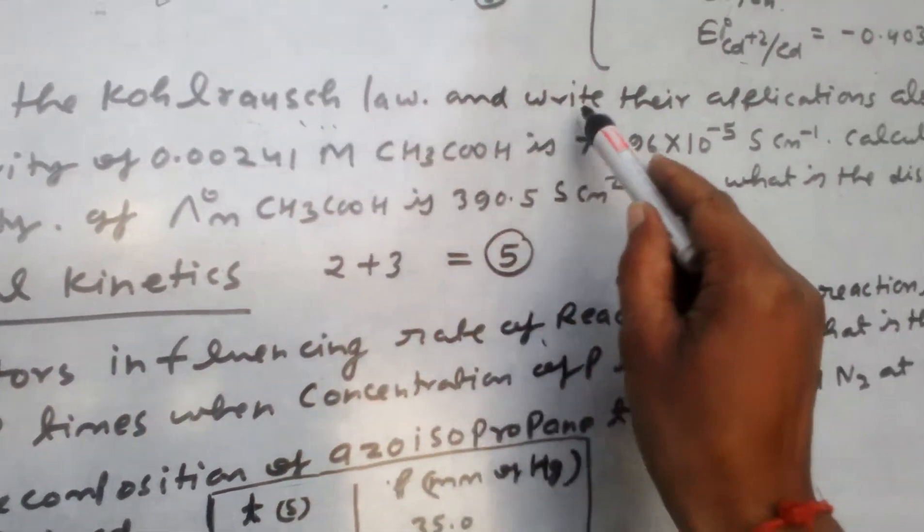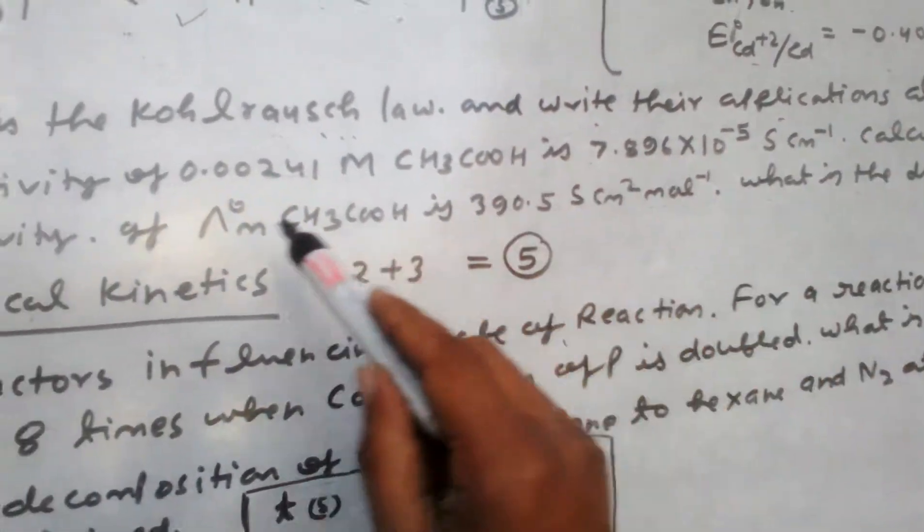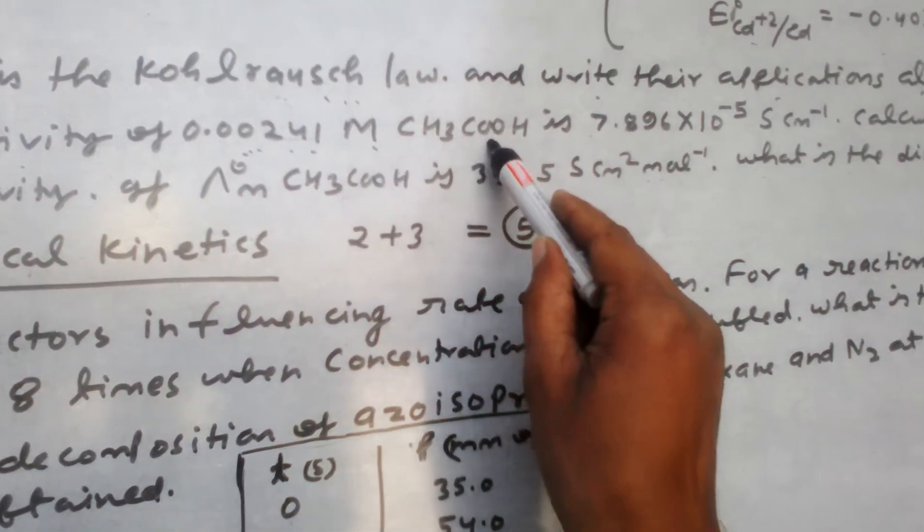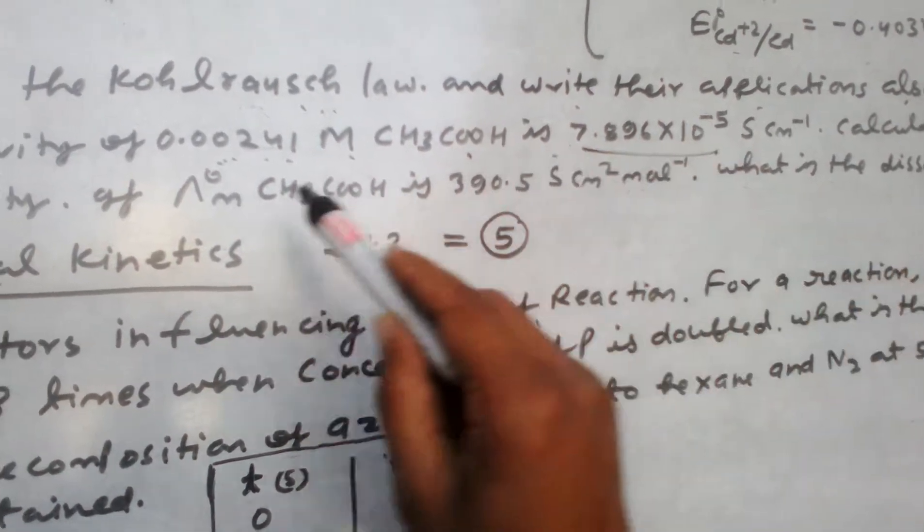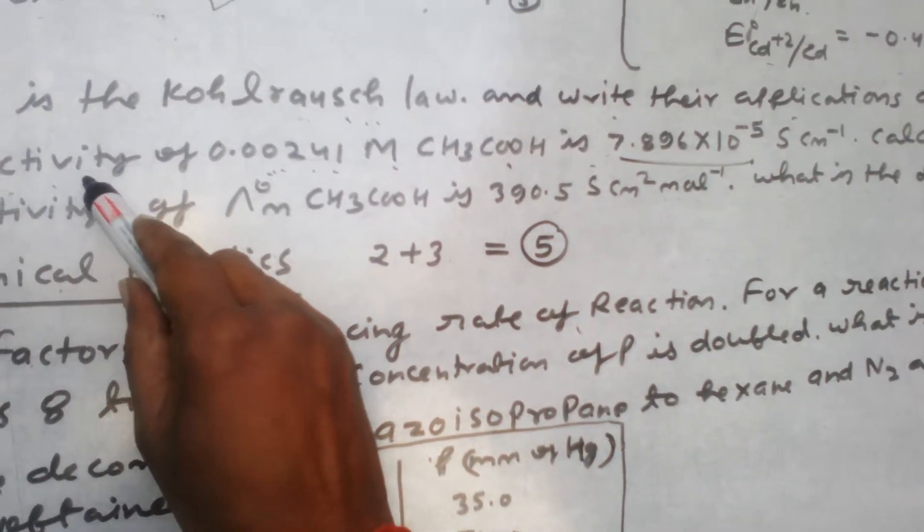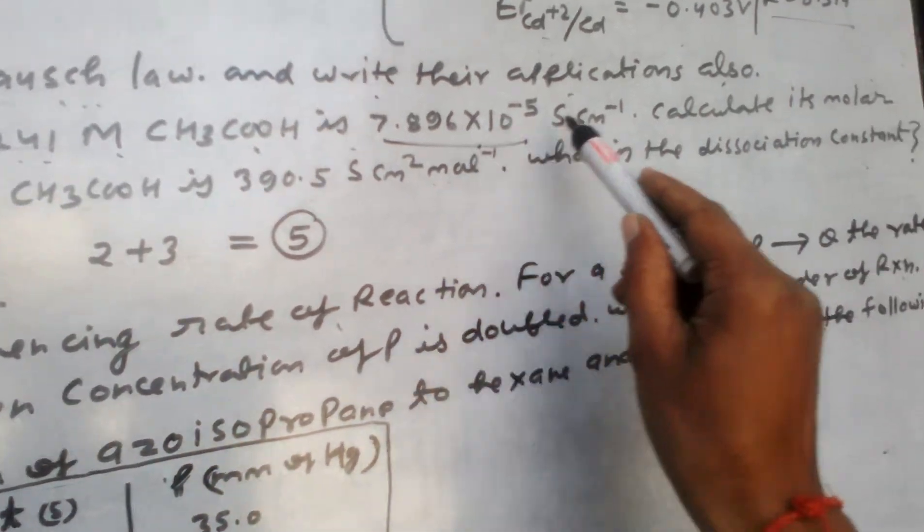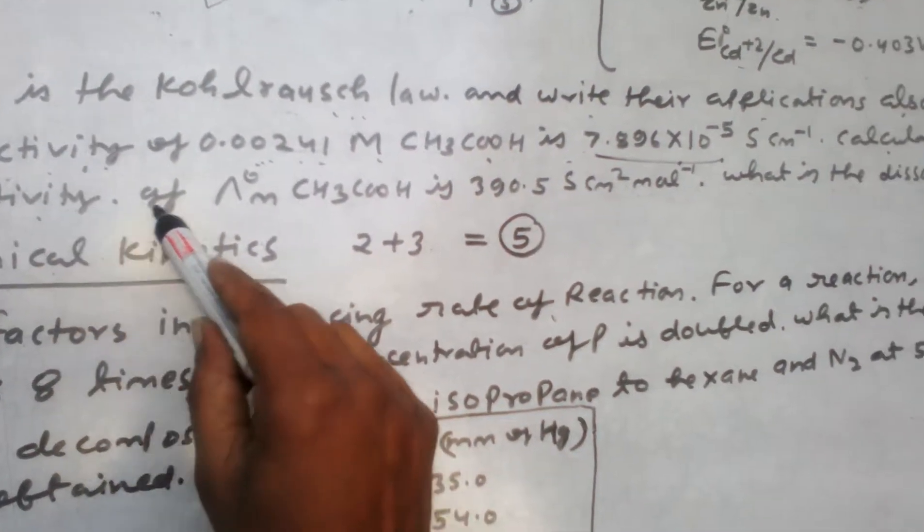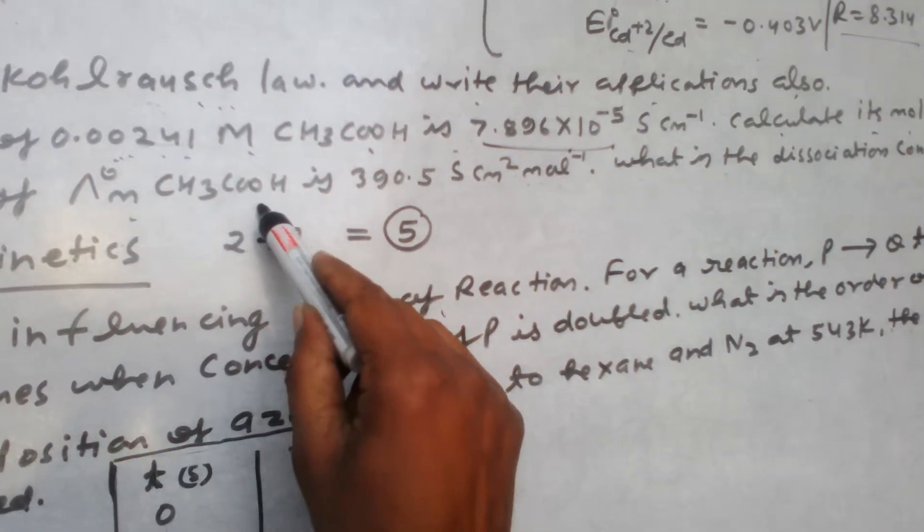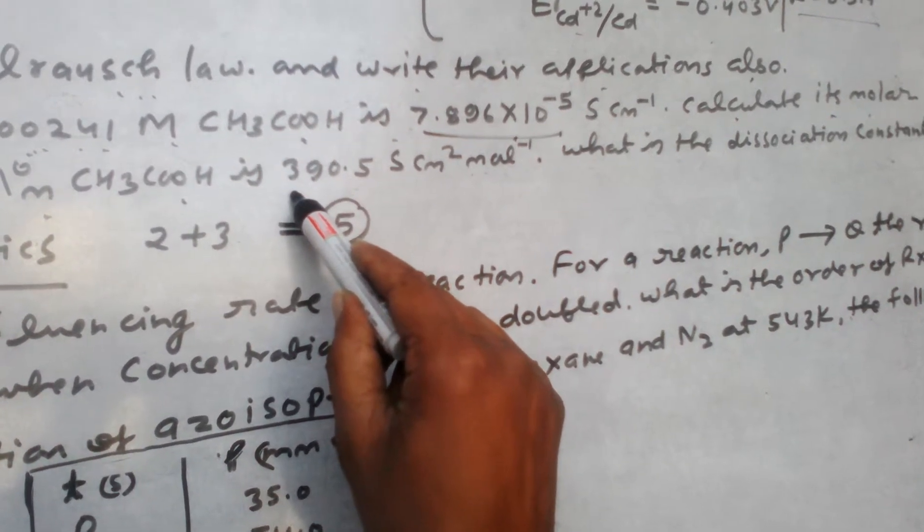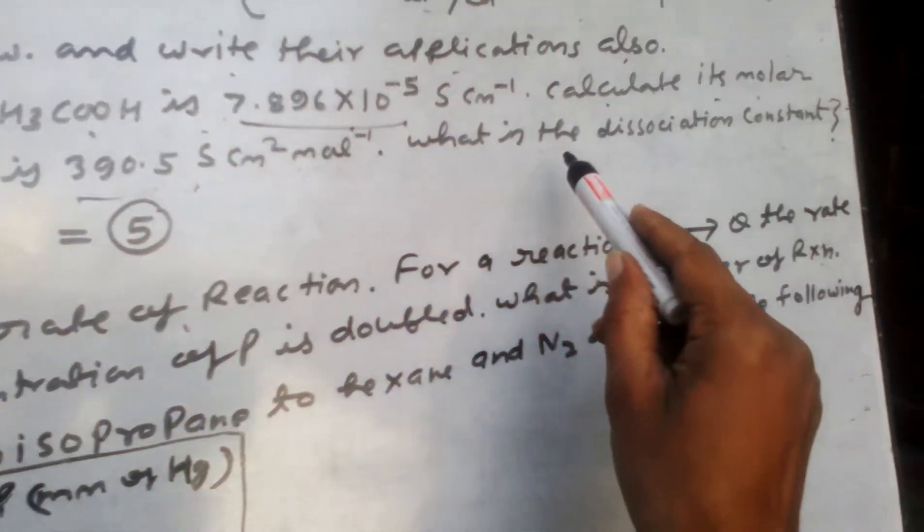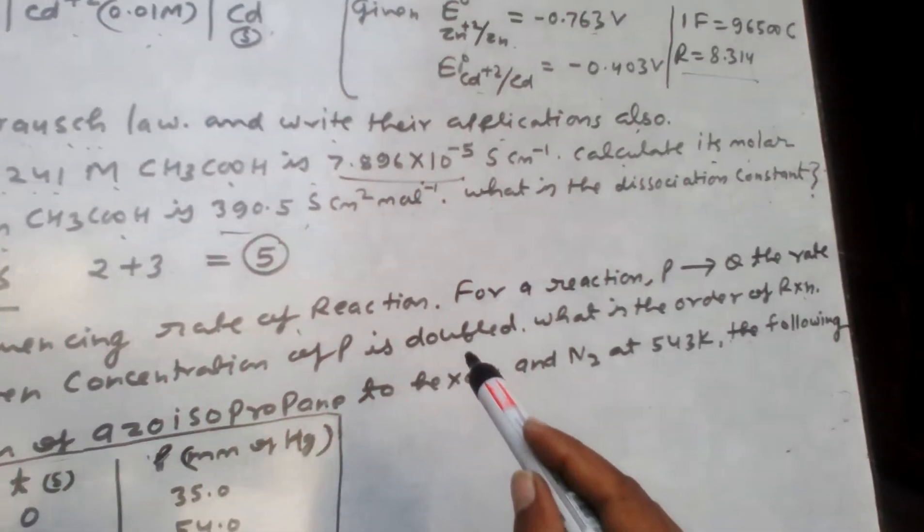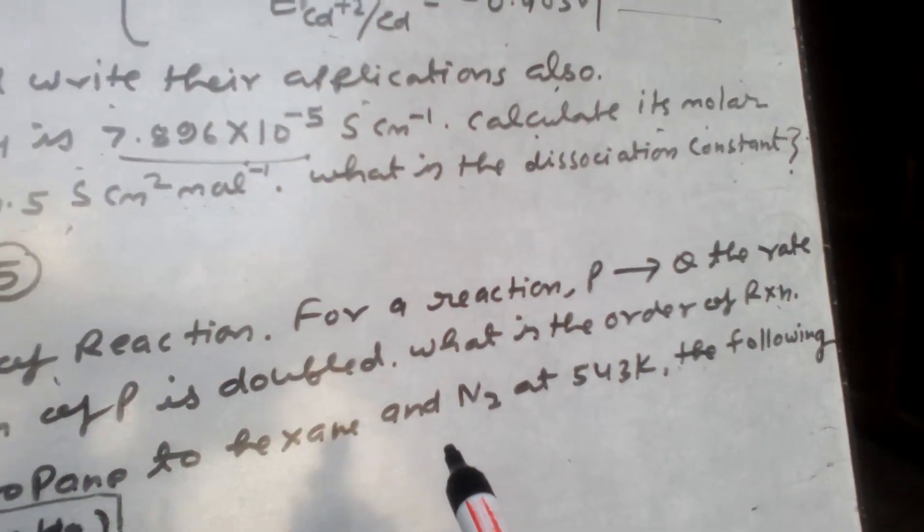The numerical: conductivity of 0.00241 molarity acetic acid is given. Calculate its molar conductivity. Limiting molar conductivity of acetic acid is given as 390.5. What is the dissociation constant?